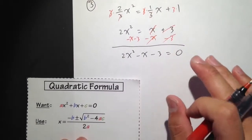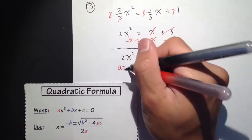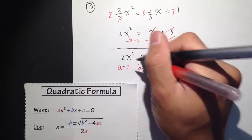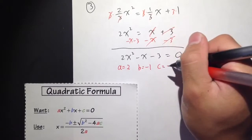Then identify what's the value of A, which is 2. What's the value of B, which is negative 1. And what's the value of C, which is negative 3.